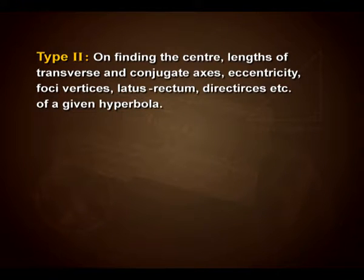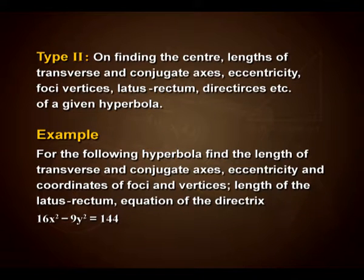Here we have another example of type 2 on finding the center, lengths of transverse and conjugate axis, eccentricity, foci, vertices, latus rectum, directrices, etc. of a given hyperbola. Here goes the example: for the following hyperbola, find the length of the transverse and conjugate axis, eccentricity and coordinates of foci and vertices, length of the latus rectum, equation of the directrices: 16x² − 9y² = 144.